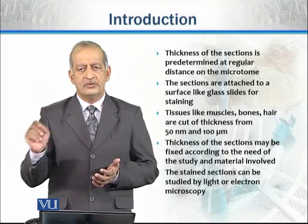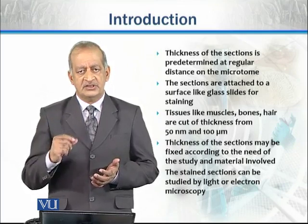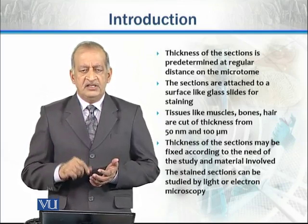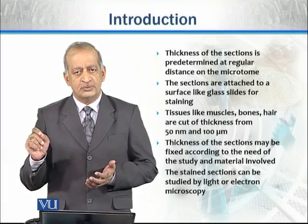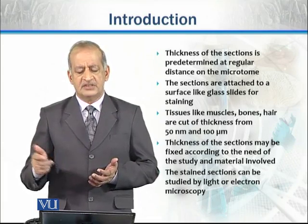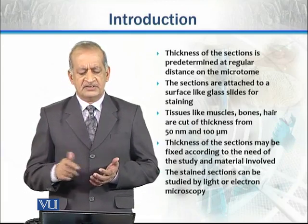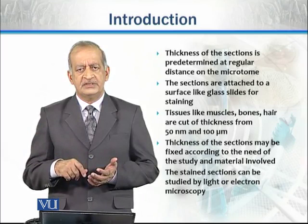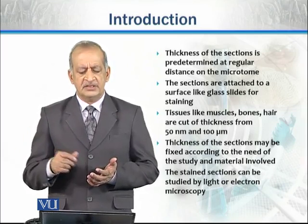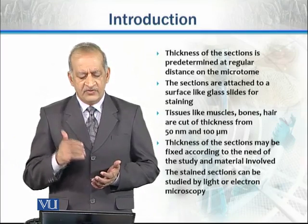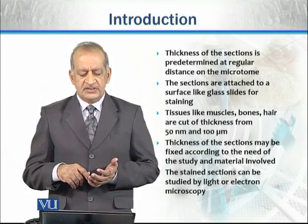We can fix the desired thickness on the microtome, and when we operate it, we get sections of that particular thickness. These sections are attached to a supporting surface such as a glass slide for staining. Tissues like muscle, liver, and other animal and plant tissues, including bones and hairs, may be cut from 50 nanometers to 100 micrometers in thickness.